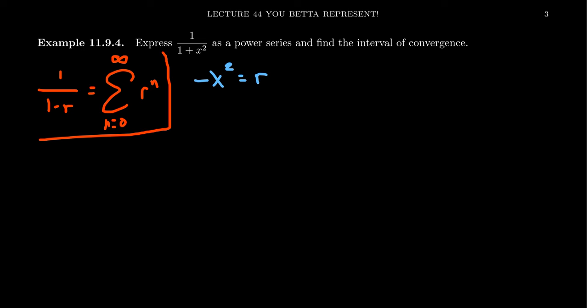With that substitution in mind, 1 over 1 plus x squared equals the geometric series starting at n equals 0. Unless you have a strong reason to do otherwise, start your geometric series at 0. We take the sum from n equals 0 to infinity and replace r with negative x squared, raised to the nth power.